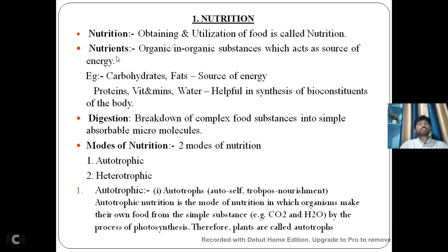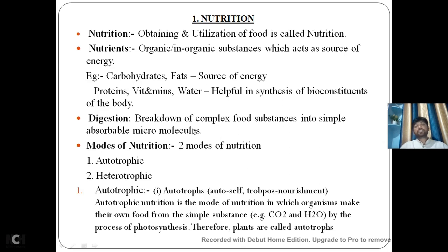Carbohydrates, fats, and proteins are all complex forms of food. The simple forms of carbohydrates are glucose, fructose, maltose, etc. The simple form of fats are fatty acids and glycerol. The simple form of proteins are amino acids. These are all called nutrients.